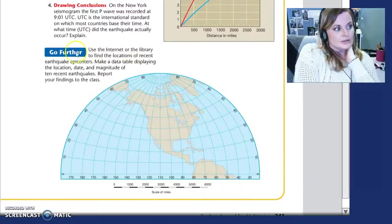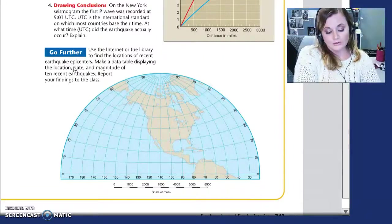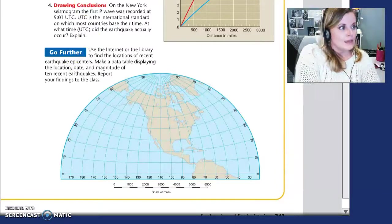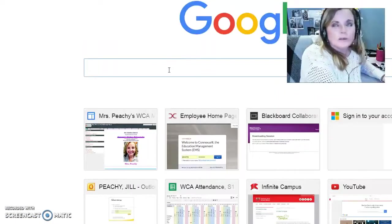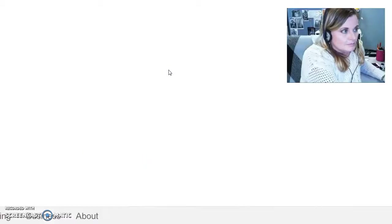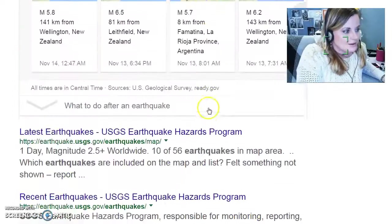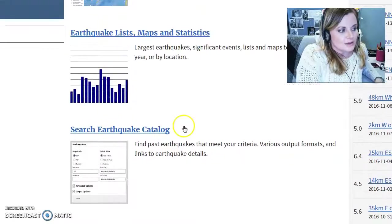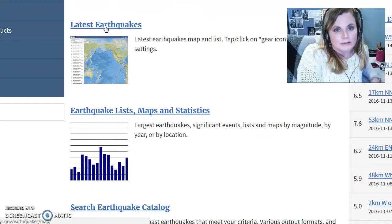The last thing you're going to need to do is the Go Further section. You're going to be using a website to locate recent earthquakes and tell me 10 recent earthquakes, when they occurred, where they occurred, and their magnitudes on the Richter scale. And I would suggest using the USGS website, excuse me, Earthquakes. Having a moment there. United States Geological Survey. They have a website that is all just recent earthquakes, okay? And you'll be able to click on this and find recent earthquakes very easily, and it's a very reliable place to get statistics.